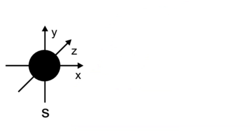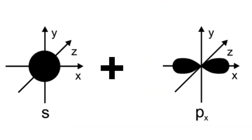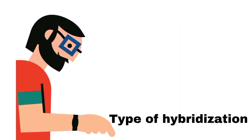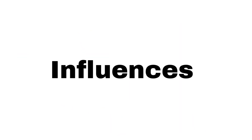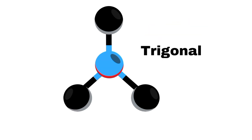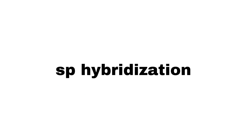Hybridization is a concept in chemistry that explains the mixing of atomic orbitals to form new hybrid orbitals. These hybrid orbitals are crucial for understanding the bonding and geometry of molecules. The type of hybridization influences the molecular geometry, bond angles, and overall shape of the molecule. Some common types of hybridization are sp, sp2, and sp3.